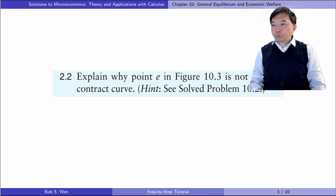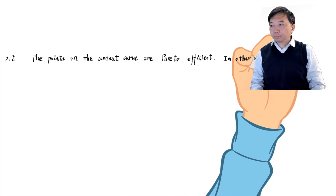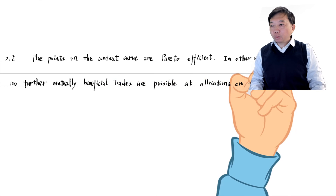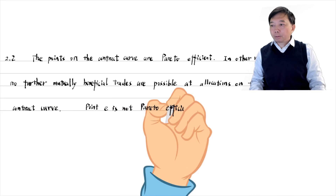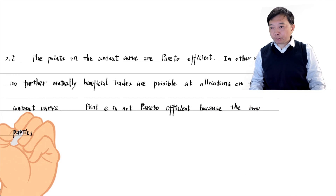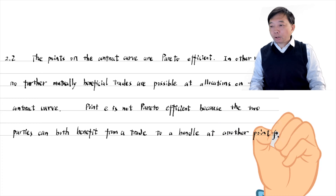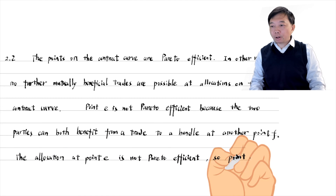Let's answer exercise 2.2. Explain why point E in figure 10.3 is not on the contract curve. The points on the contract curve are Pareto efficient — no further mutually beneficial trades are possible at allocations on the contract curve. Point E is not Pareto efficient, because the two people can both benefit from a trade to a bundle at another point F. Therefore, the allocation at point E is not Pareto efficient, so point E is not on the contract curve.